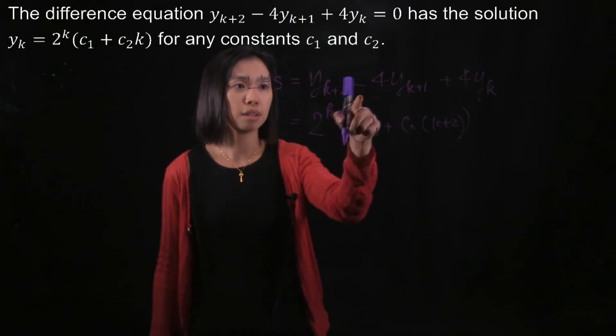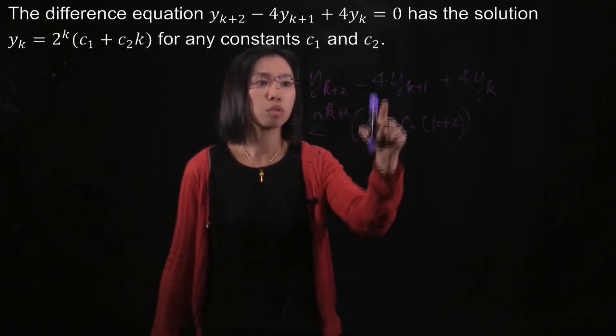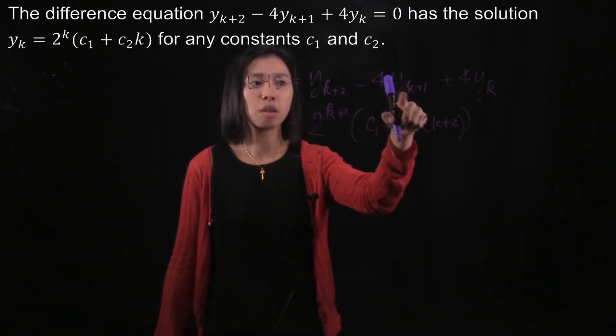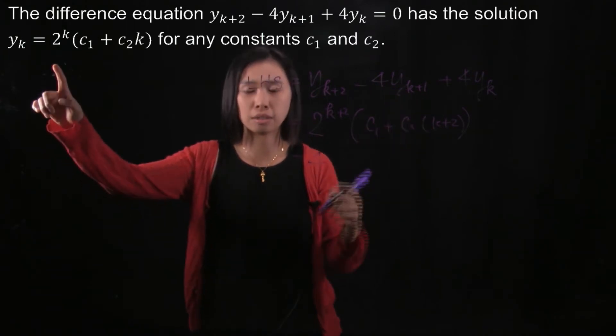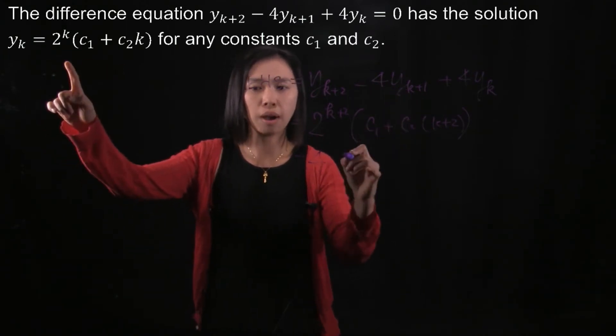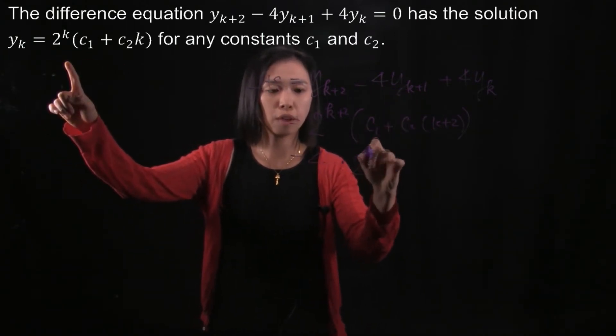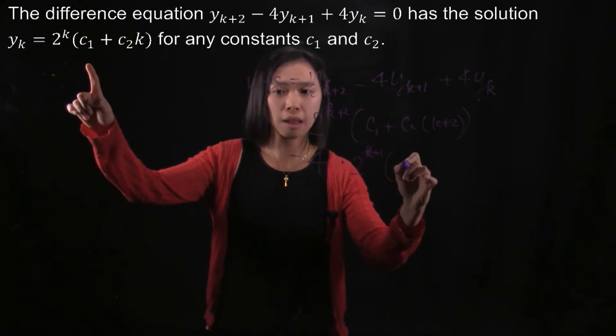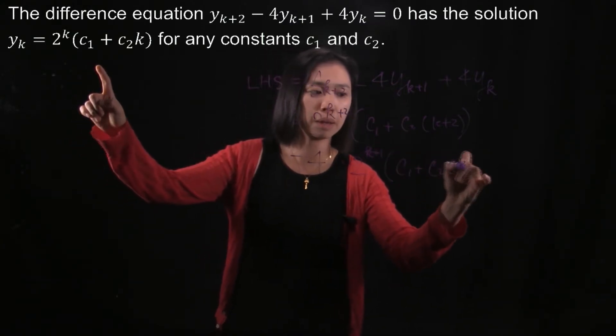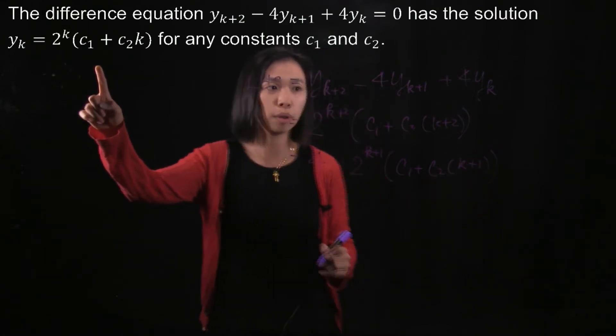And then you will minus 4 times... So this time you replace the y_{k+1} by this thing. So you will have 2^{k+1} times (c_1 + c_2(k+1)).